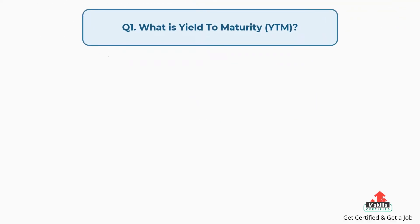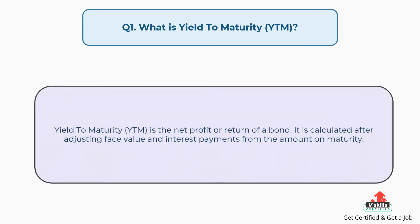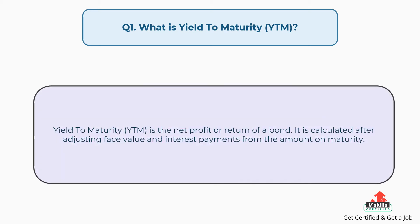Question number one: what is yield to maturity? The answer is, yield to maturity is the net profit or return of a bond. It is calculated after adjusting face value and interest payments from the amount on maturity.